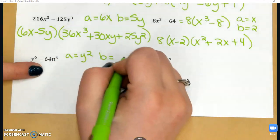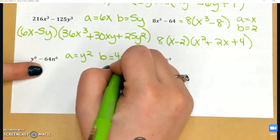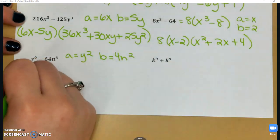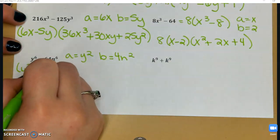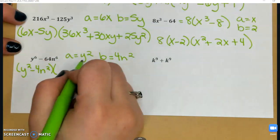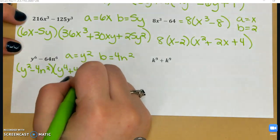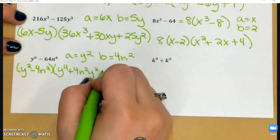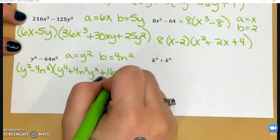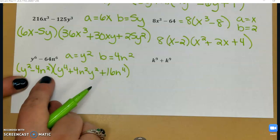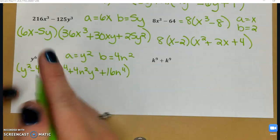So my difference of cubes: (y² - 4n²)(y⁴ + 4n²y² + 16n⁴). Now, looking at what I have here in the front, I have a difference of two squares. So I can factor this first parenthesis even further.